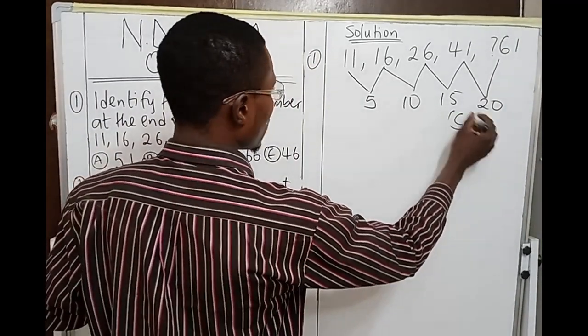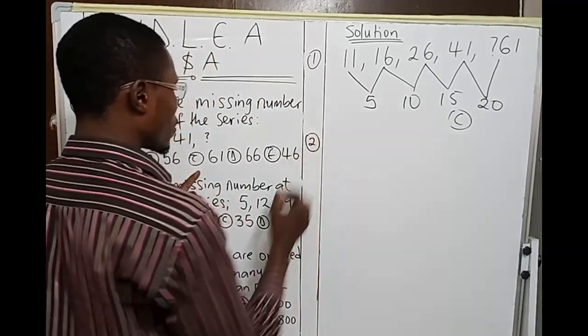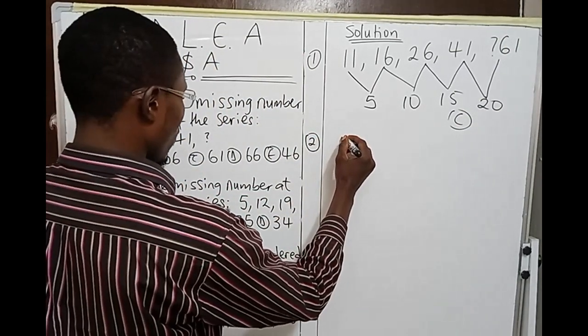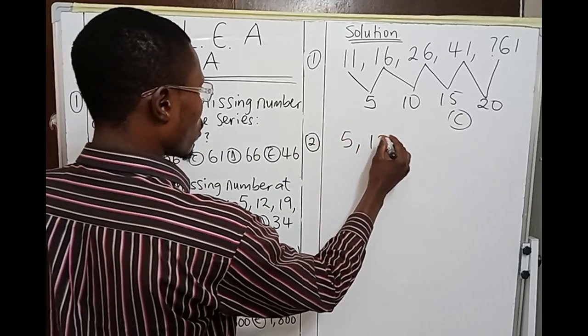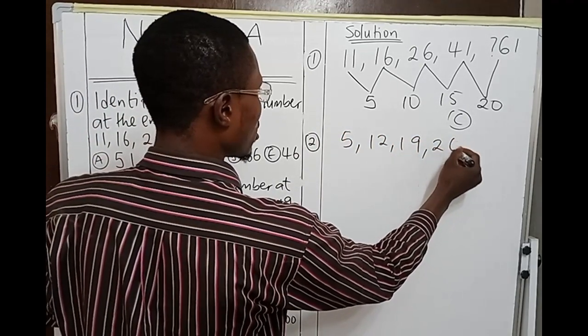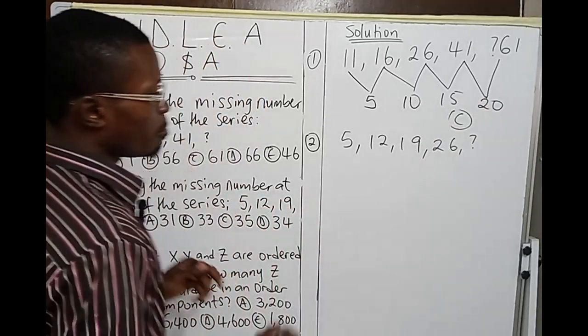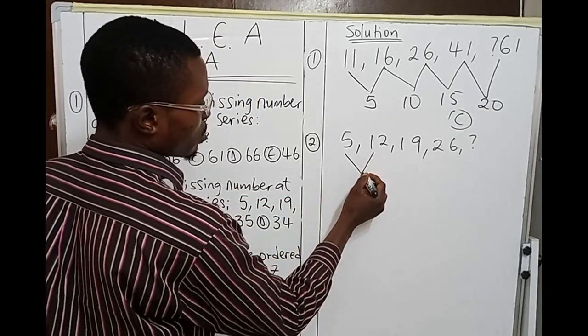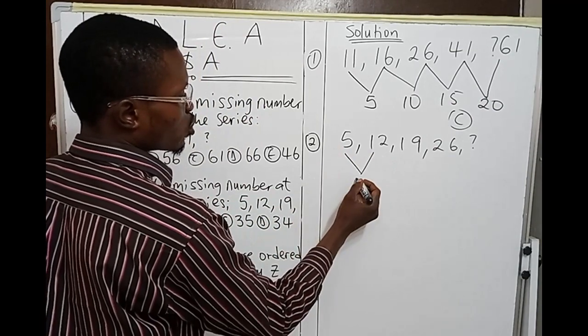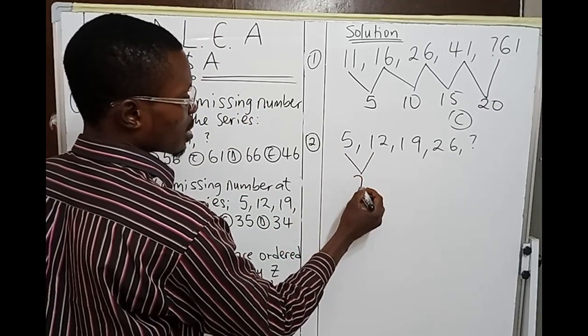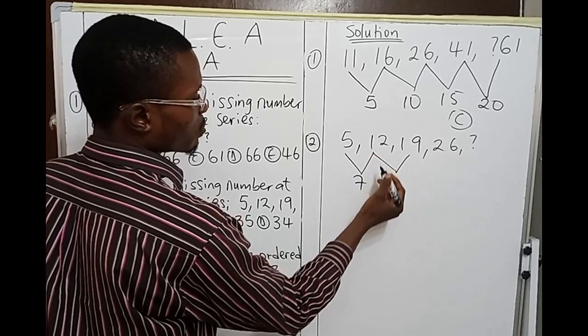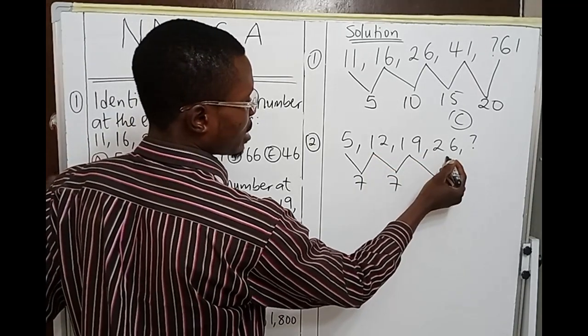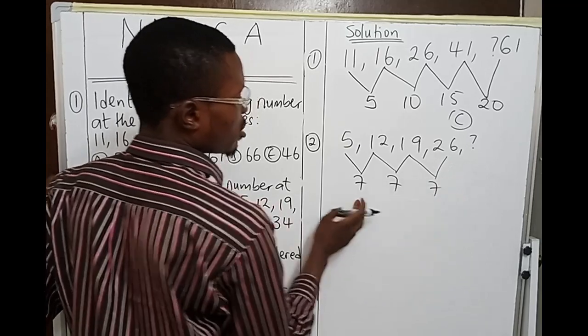You come to number two. For number two we have the series: 5, 12, 19, 26, and then the missing number. Let us get the difference of each consecutive term. 12 minus 5 is 7. 19 minus 12 still 7. 26 minus 19 is 7.